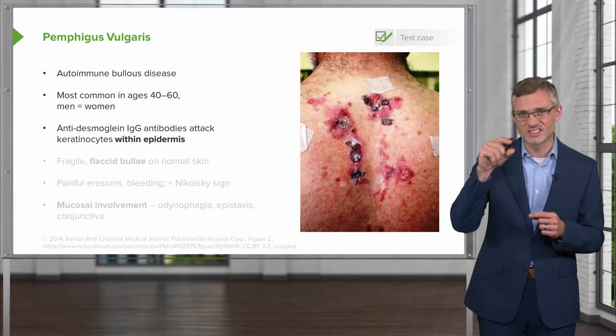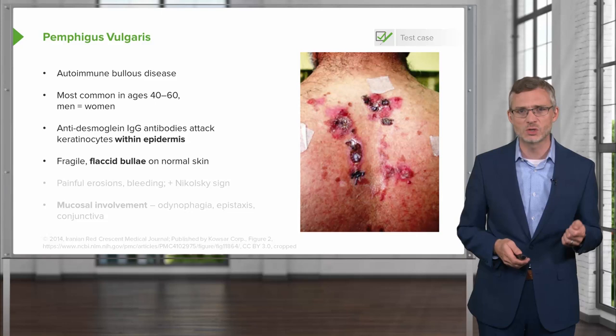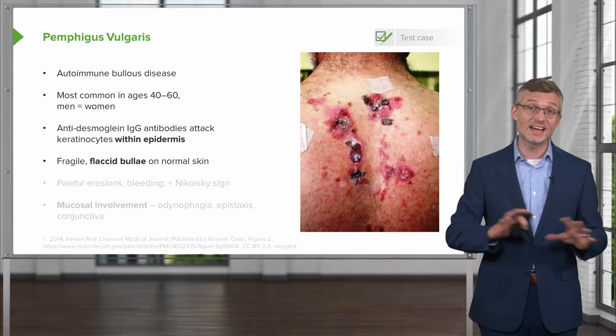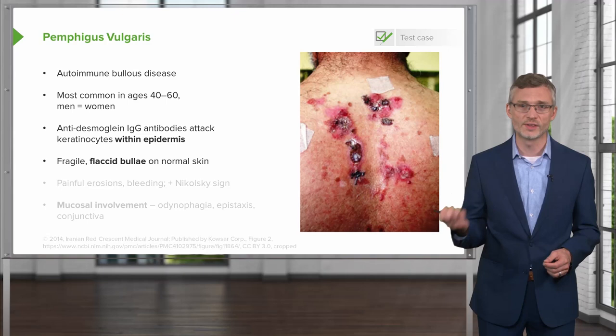For that reason, you're going to have fragile, flaccid bullae on normal skin. And oftentimes when a patient presents, you may not see any bullae whatsoever. Even though this is a lecture about bullous diseases, the bullae are so thin-walled that they're very prone to rupture before you even see the patient.